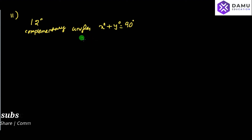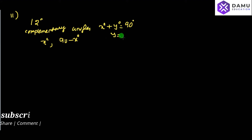So, let us take one angle to be x degrees. Then the other angle will be 90 minus x degrees. So we are getting two angles: x degrees and 90 minus x degrees. The two differ by 12 degrees.